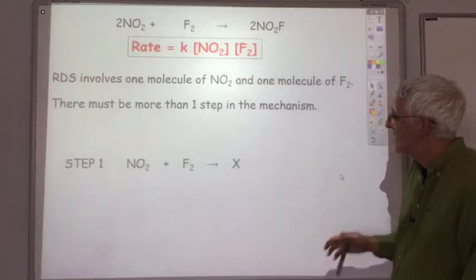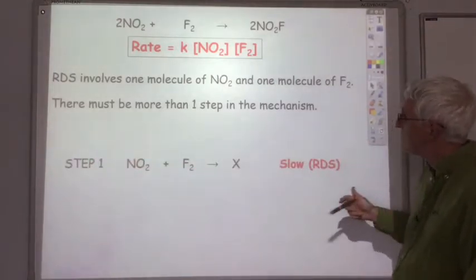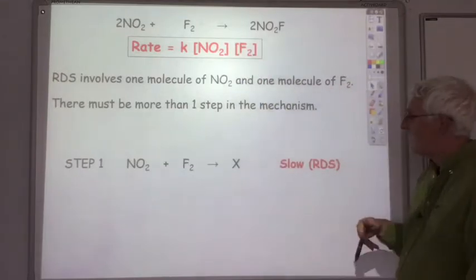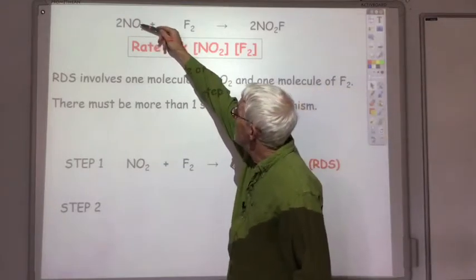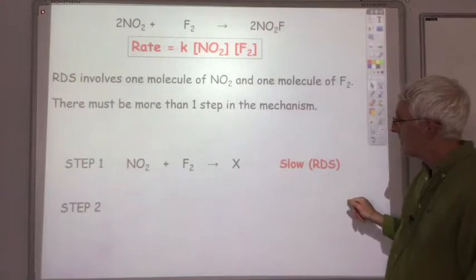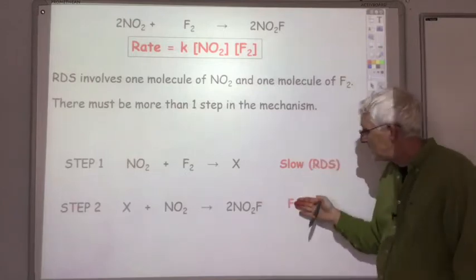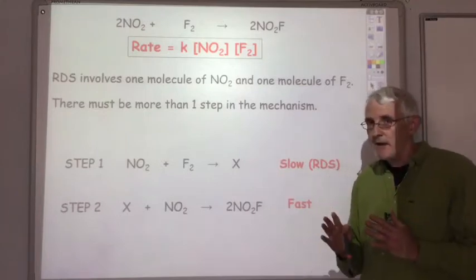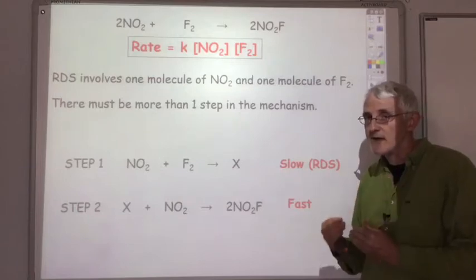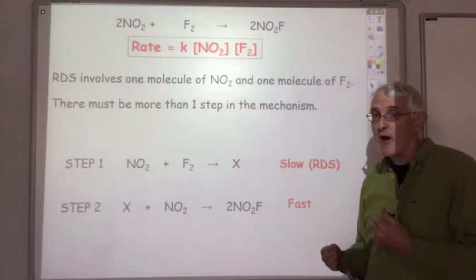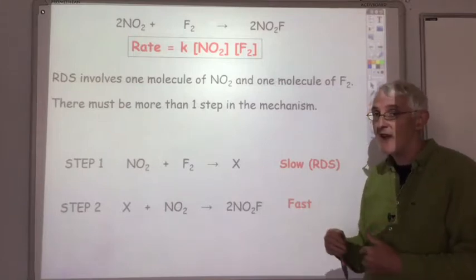Possibly, one molecule of NO₂ reacts with one molecule of F₂ to produce an intermediate X — that's the slow rate determining step which gives us the rate equation. Then there must be more steps: in the second step, the intermediate X reacts with the other molecule of NO₂ — which hasn't appeared in the rate equation — to produce the products. Compared to the first step, this second step is fast. The species involved in the slow step appear in the rate equation, which is why a reactant can be absent from the rate equation if it only takes part in the fast part of the mechanism.